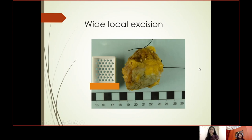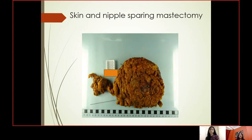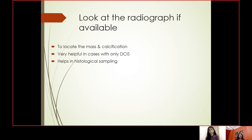This was a left-side wide local excision and we can orientate it accordingly. This is a skin and nipple-sparing mastectomy specimen with a wire-guided specimen. Look at the radiograph if available to locate the mass and calcification, which is very helpful in cases with only DCIS. It also helps in histological sampling.